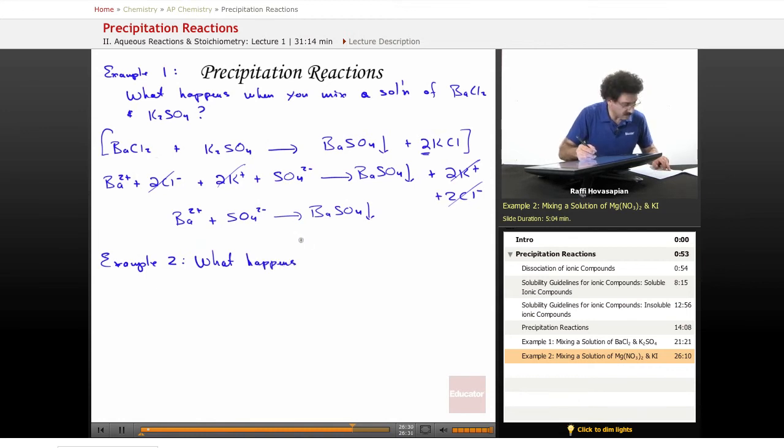What happens when a solution of magnesium nitrate, Mg(NO3)2, and potassium iodide, KI, are mixed?